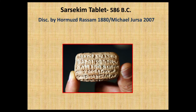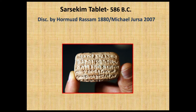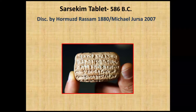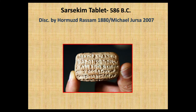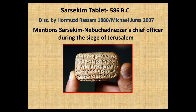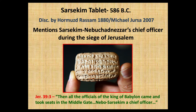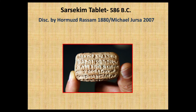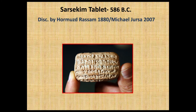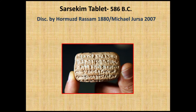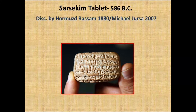This is the Saraucum tablet from around 586 BC, discovered in 1880 and came to light again in 2007. Many inscriptions and tablets are found and taken to museums and never deciphered for many years — there are literally thousands of these tablets not yet deciphered. This Saraucum tablet actually mentions Saraucum, who was Nebuchadnezzar's chief officer during the siege of Jerusalem, mentioned in Jeremiah chapter 39, verses 3 and 4. A recent article in Biblical Archaeology Review mentions that over 50 people whose names are in the Bible have now been found in various inscriptions.